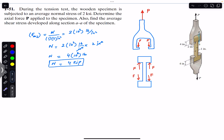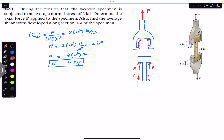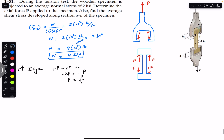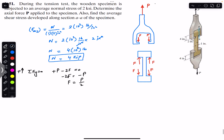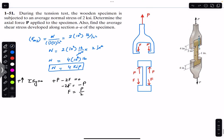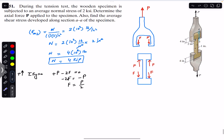To find F in terms of P, we apply the sum of forces in the Y direction for the upper free body diagram, with upward as positive: P − 2F = 0. Therefore F = P/2, meaning half of force P acts on each side of the specimen.